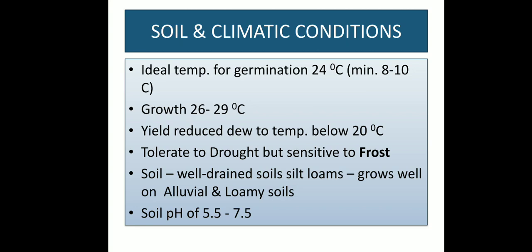Soil and Climatic Conditions: The ideal temperature required for germination is 24 degrees Celsius. A mean temperature of 26 to 29 degrees Celsius is optimum for growth. Crop yields are reduced at temperatures below 20 degrees Celsius. The crop possesses good drought tolerance but is highly sensitive to frost. It is grown on a wide range of soils with varying fertility. It prefers porous and well-drained soils. It has the best ability to tolerate salinity. Among cereals, alluvial and loamy soils are suitable. Deep, impervious and rocky soils are not suitable. It can be grown in soils with pH of 5.5 to 7.5.